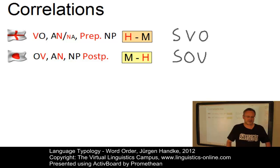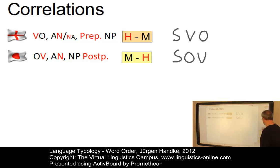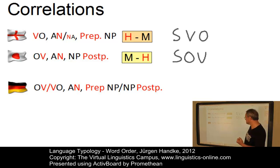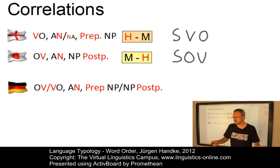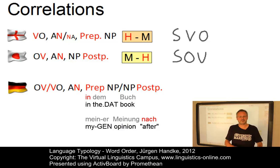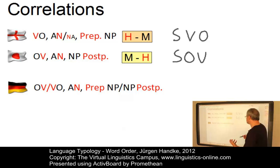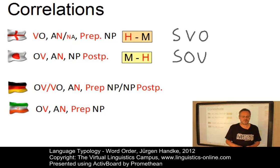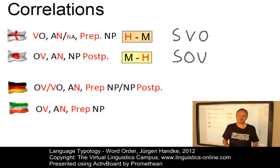Sometimes there are languages that represent both patterns. For example, in German we find both: object-verb constructions in subordinate clauses and verb-object constructions in main clauses. We have adjectives that precede their heads, but also prepositions — 'in dem Buch' — and postpositions — 'meiner Meinung nach.' So German is obviously a mixed-type language. Another peculiar language is Persian, which has a strict SOV order but prepositions. So despite the formal clarity of basic word order patterns and head-modifier ordering, languages are often not that well organized and are open to exceptions.